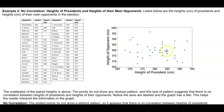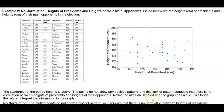When you look at this graph, you can see that there are points that are kind of all over the place. It doesn't give you a unique pattern to see what's happening — whether it's increasing or decreasing. So we would say the scatter plot of the paired heights shows that the points do not show any obvious pattern, and this lack of pattern suggests that there is no correlation between heights of presidents and heights of their opponents.